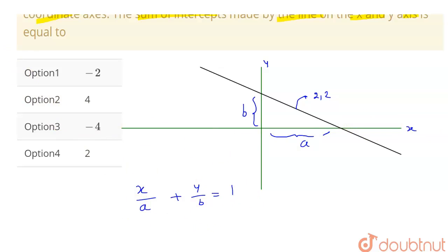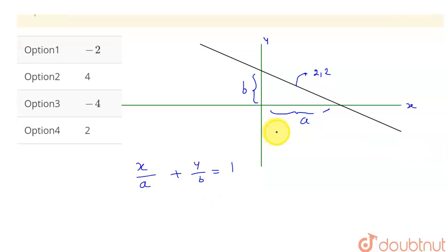Now, we have given that this line is passing through 2 comma 2. So, this line will satisfy this point. So, let me write.